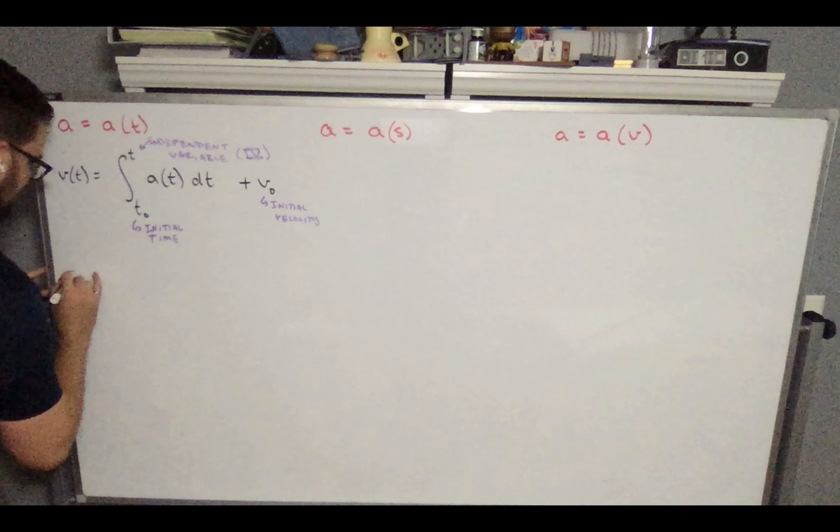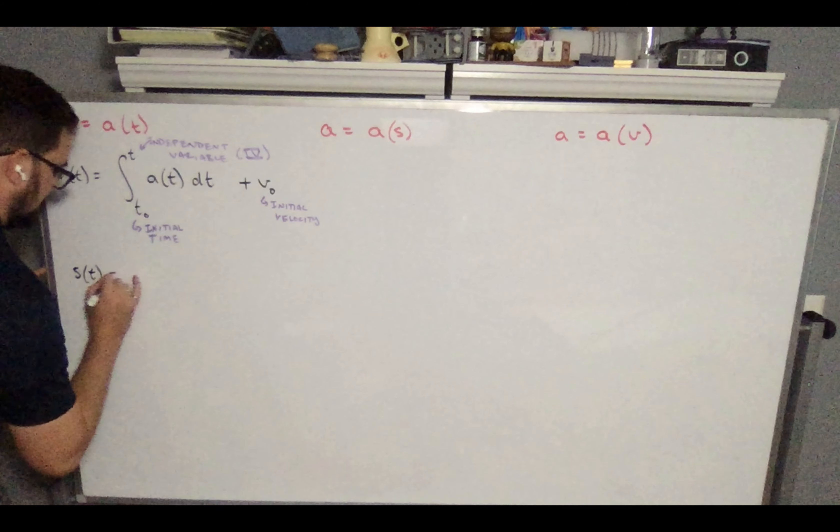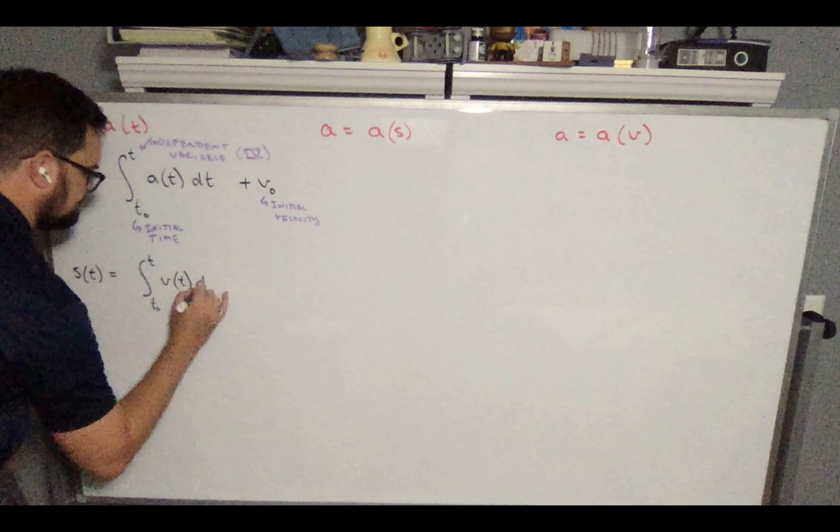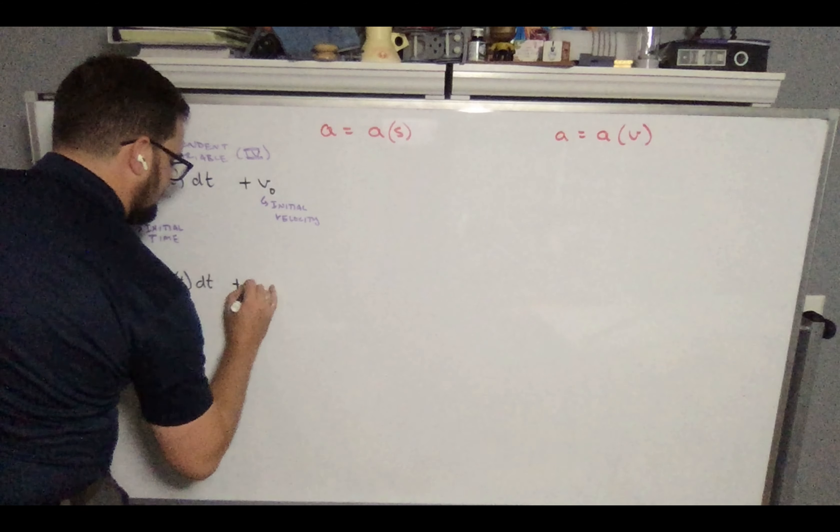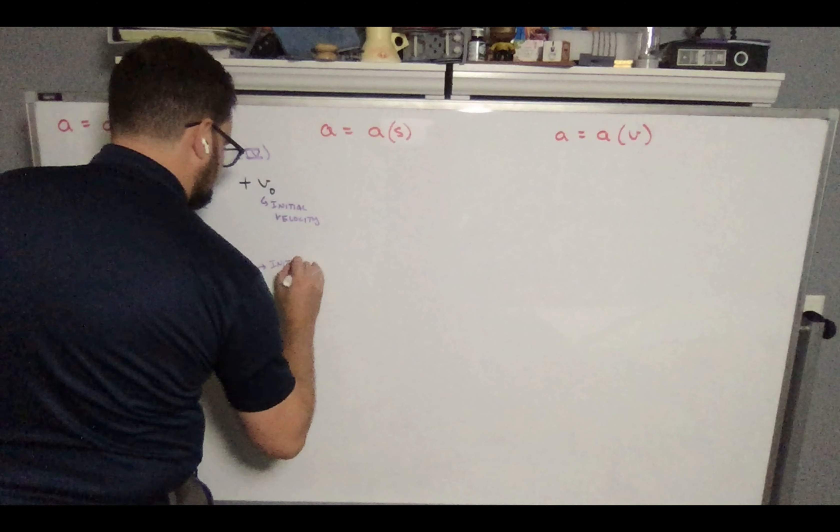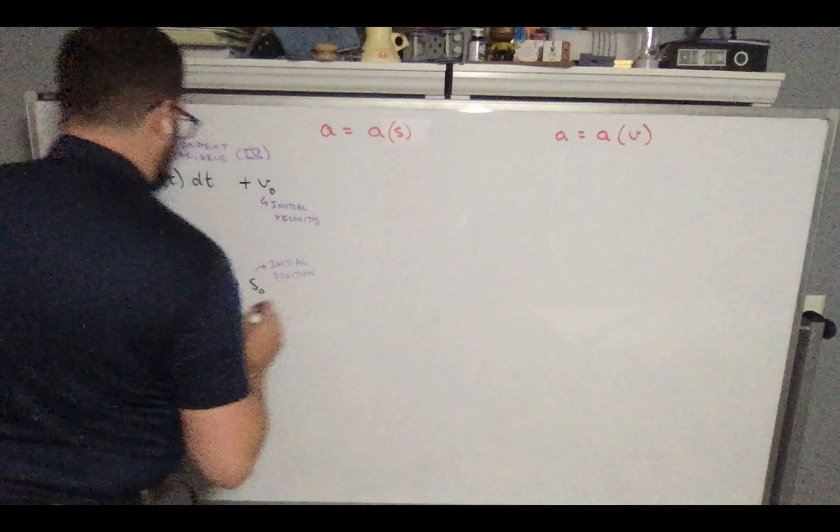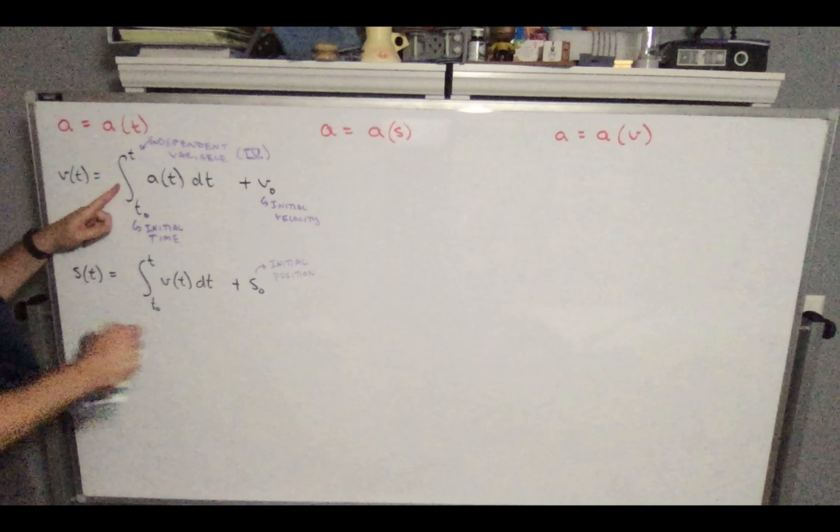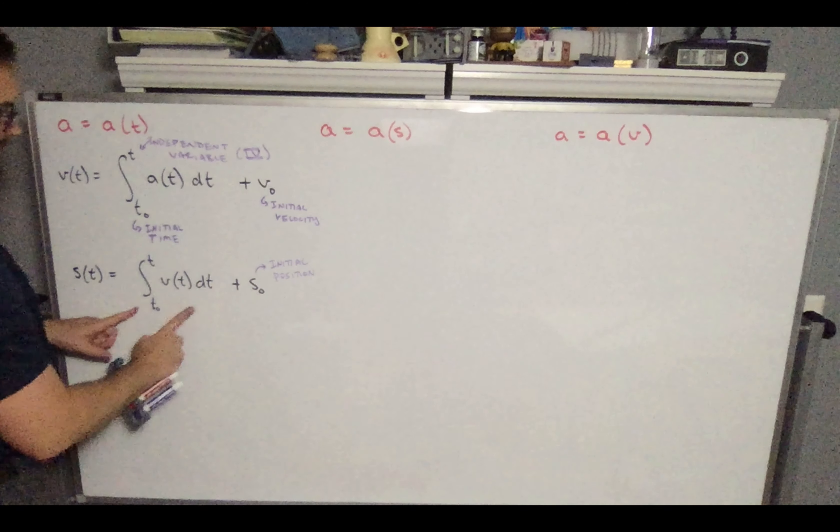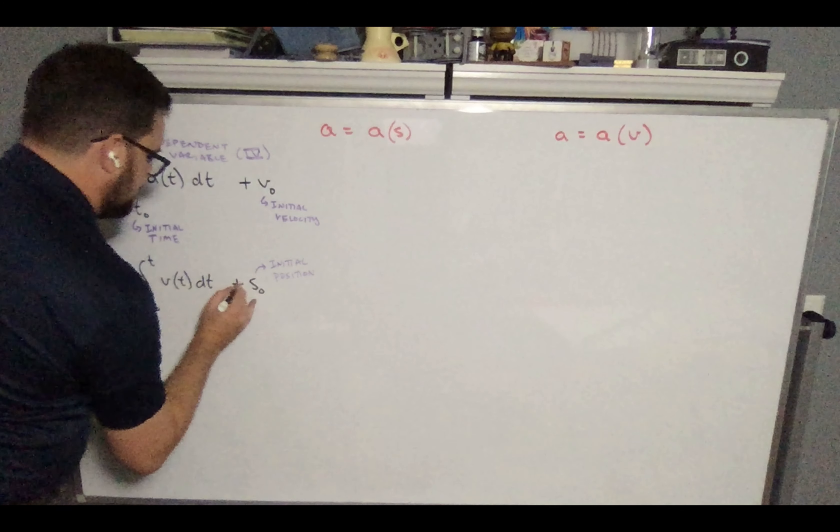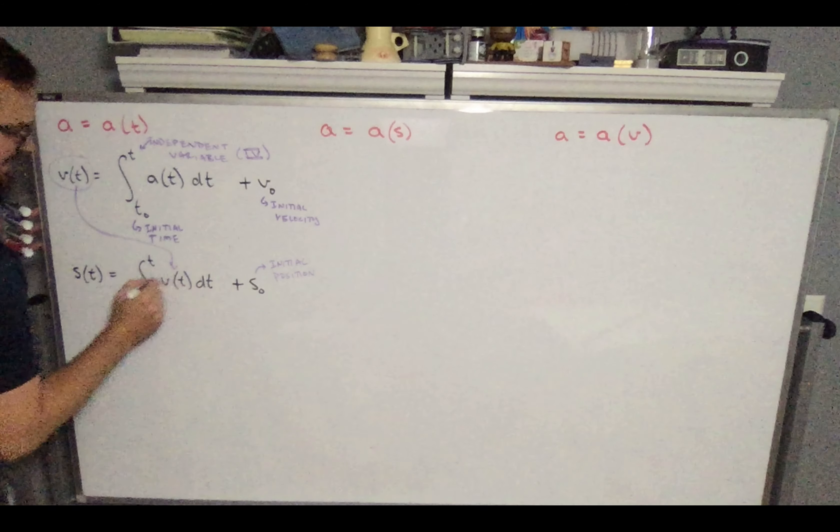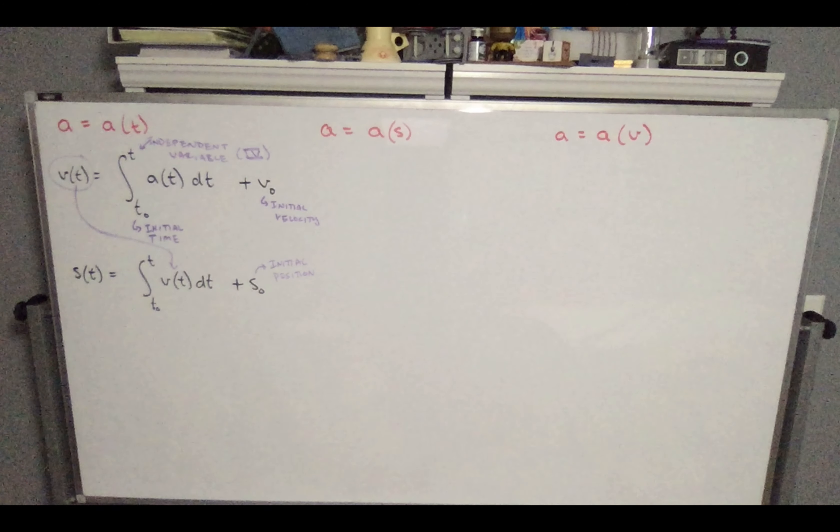That's going to give us a function of velocities where we could plug in any given t and we could find the velocity. So there's acceleration as our function of time. And we would integrate. Once we found that velocity is a function of time, we could then calculate position as a function of time by integrating our velocity. And in this case, we're going to have to add our initial position.